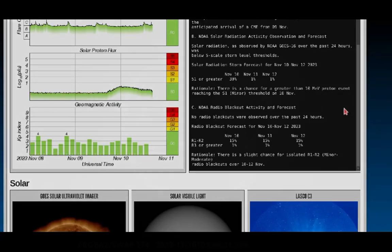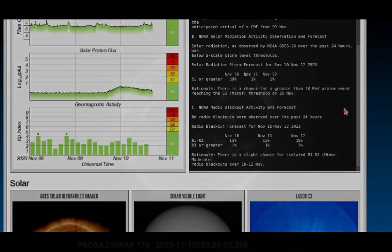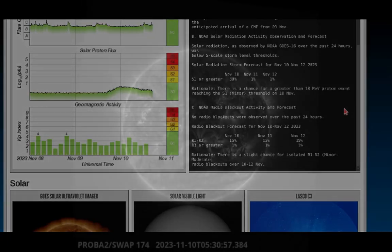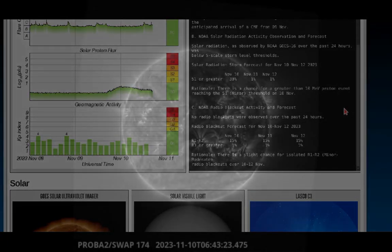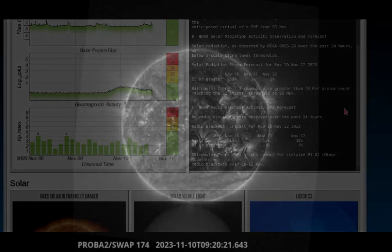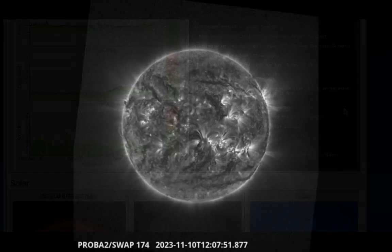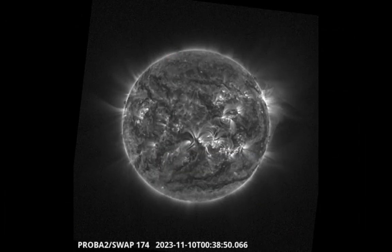Similarly, the radio blackout anticipation, we have a slight chance of an R1 or R2. As per usual, we had tons of charged particles impact the Earth's ionosphere. So it seems like it's going to be a significant geomagnetic event, but it wasn't a very significant flaring event.